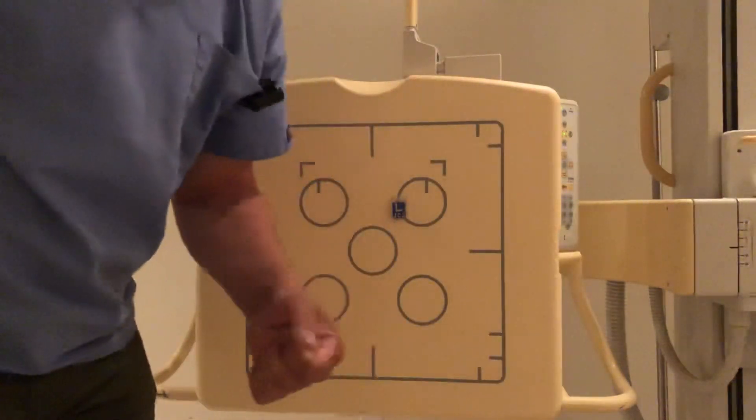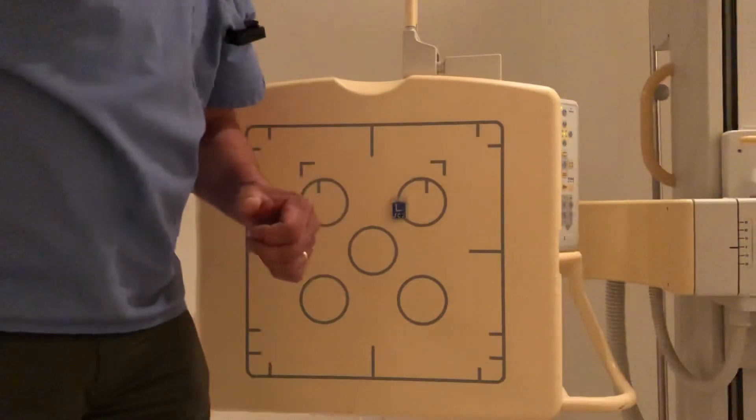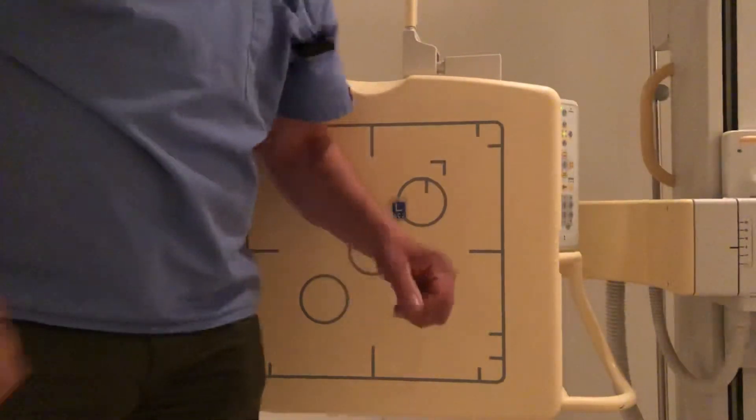So those are the three ways you can take a trauma elbow series upright when the elbow is flexed. If you enjoyed this video, please like, comment, share, and subscribe. Thanks so much.